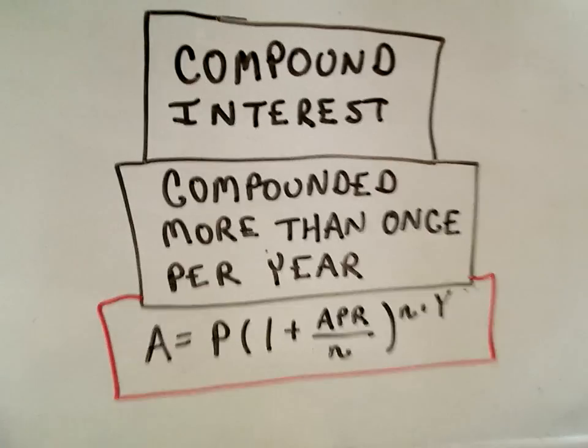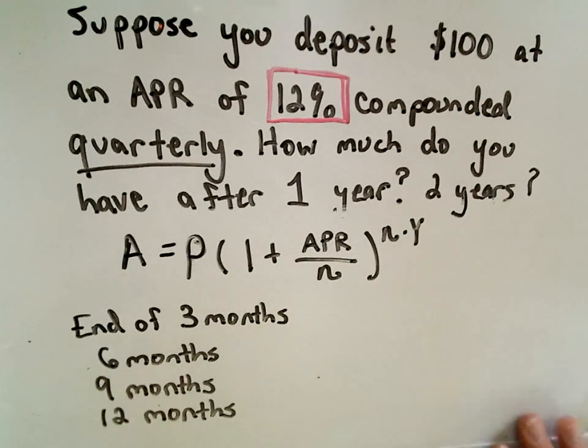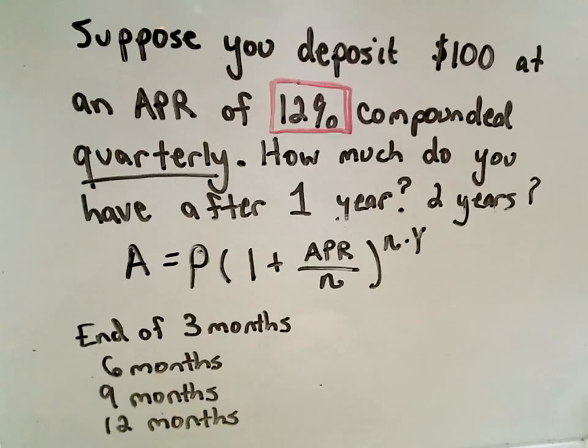I'm going to talk about where this formula comes from briefly and then just do a couple real simple examples with it. Nothing at all crazy. So suppose you start with $100 at an APR of 12% compounded quarterly. We want to know how much you have after one year and maybe after two years.